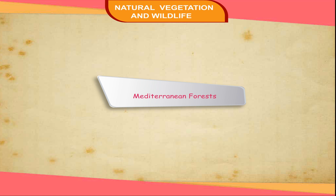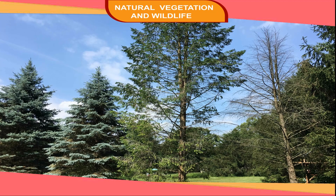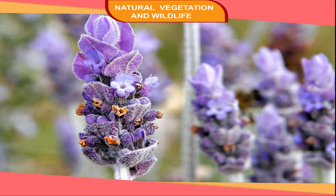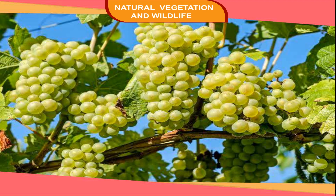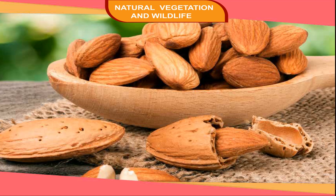Mediterranean Forests. This type of vegetation is found largely in the areas around the Mediterranean Sea. This region experiences winter rainfall and dry summers. Plant growth largely takes place in winter, while plants need protection from the severity of heat during summer. The trees have small leaves, widely spaced, with deep roots, thick barks, and waxy leaves. The vegetation includes trees like cork, oak, pine, olive, and aromatic plants like lavender and myrtle. Grapes are grown here and fruit cultivation is carried out on a large scale. Main fruit trees include grapes, plums, peaches, apricot, cherries, and almonds.